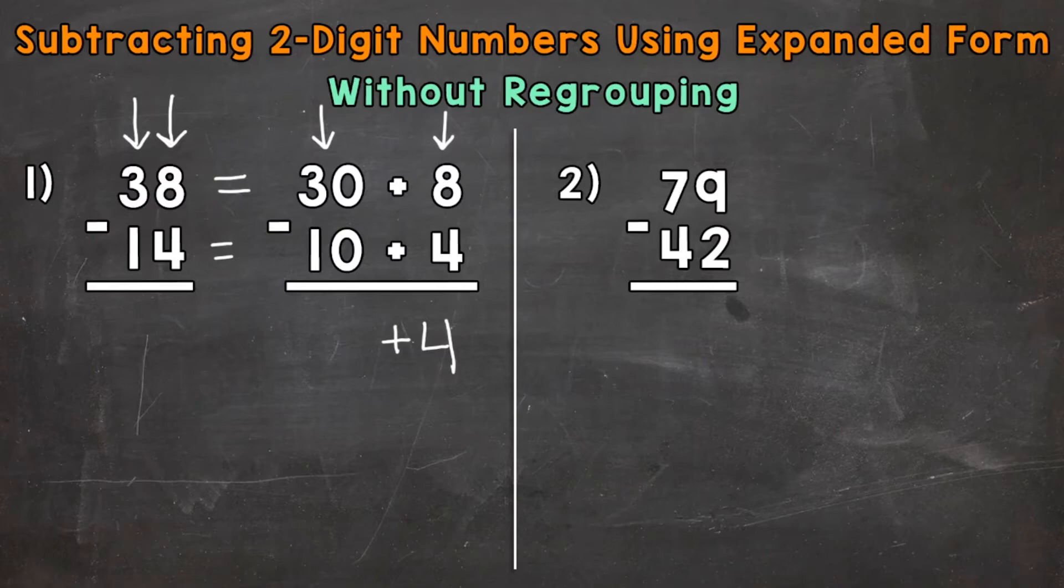So once we bring that Addition Sign down, we move to the tens. So we have 30 minus 10. That's going to give us 20. So our final answer in Expanded Form is 20 plus 4. That's going to give us, in Standard Form, 24. A 2 in the tens place and a 4 in the ones place. 24.